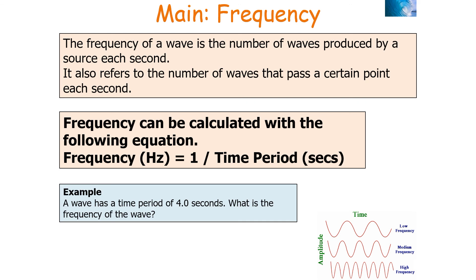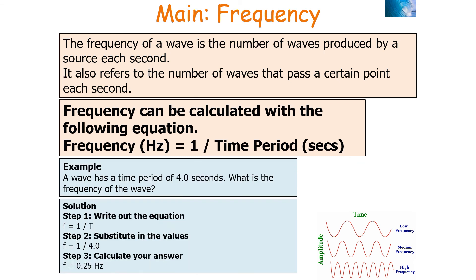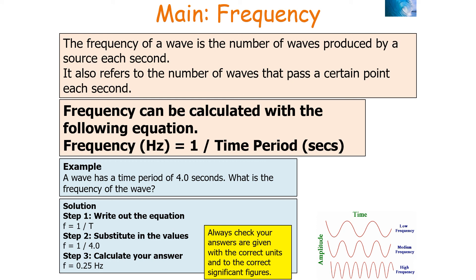Example question: a wave has a time period of 4 seconds — what is the frequency of the wave? Step one: write out the equation — frequency equals 1 over time period. Step two: substitute values — 1 over 4 seconds. Step three: calculate the answer — 1 over 4 equals 0.25 hertz. Always check your answer is given with the correct units and to the correct significant figures.